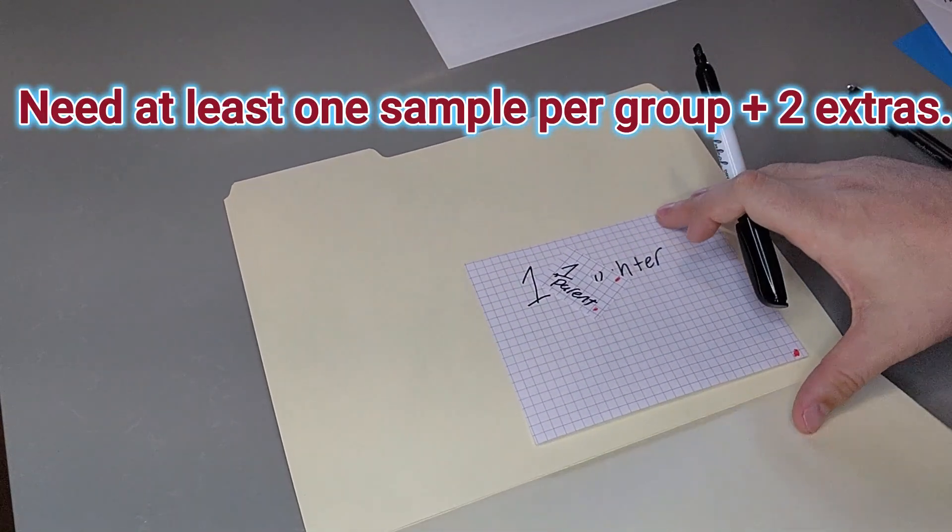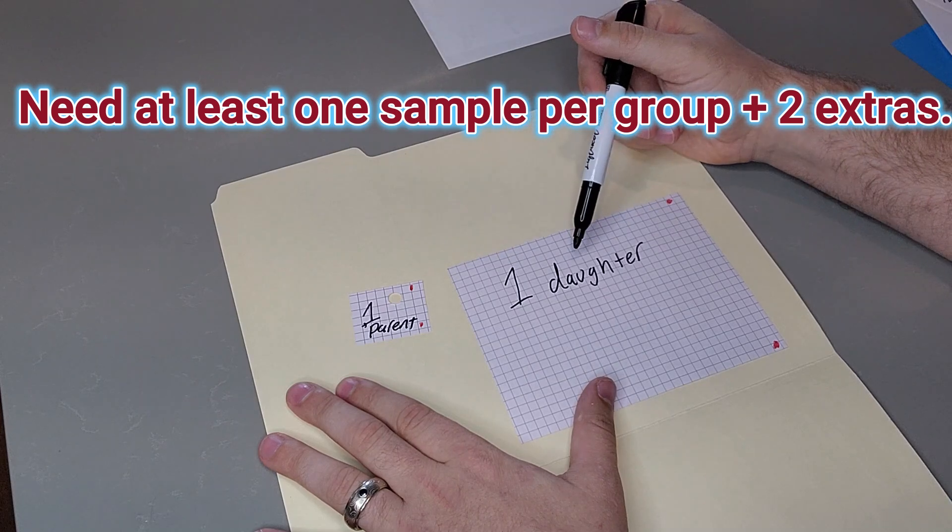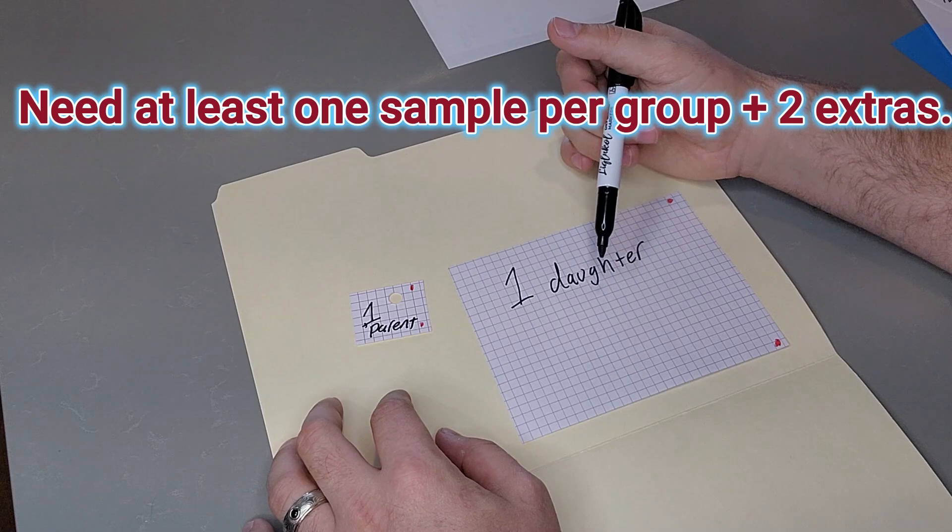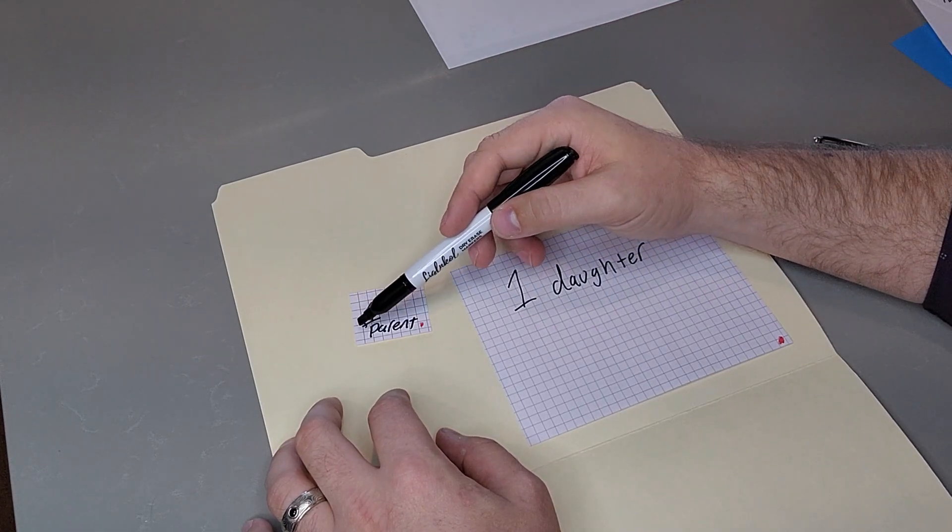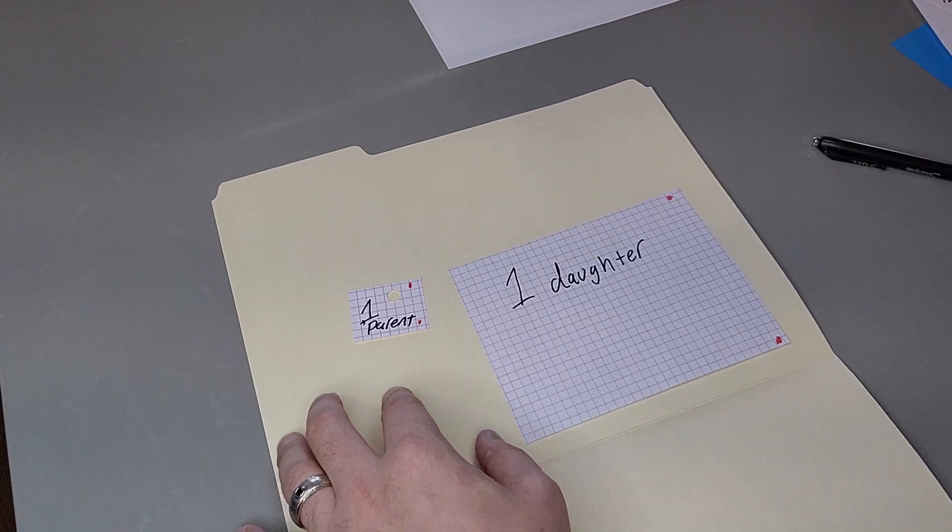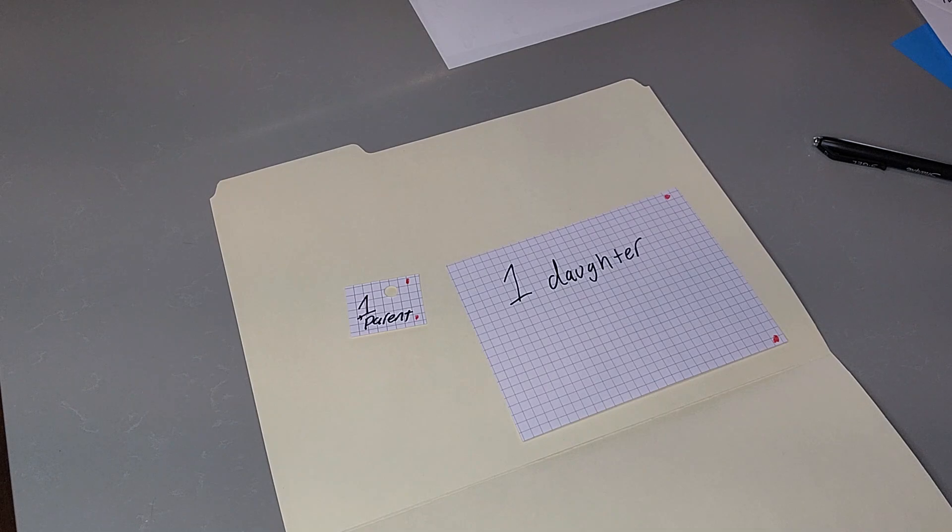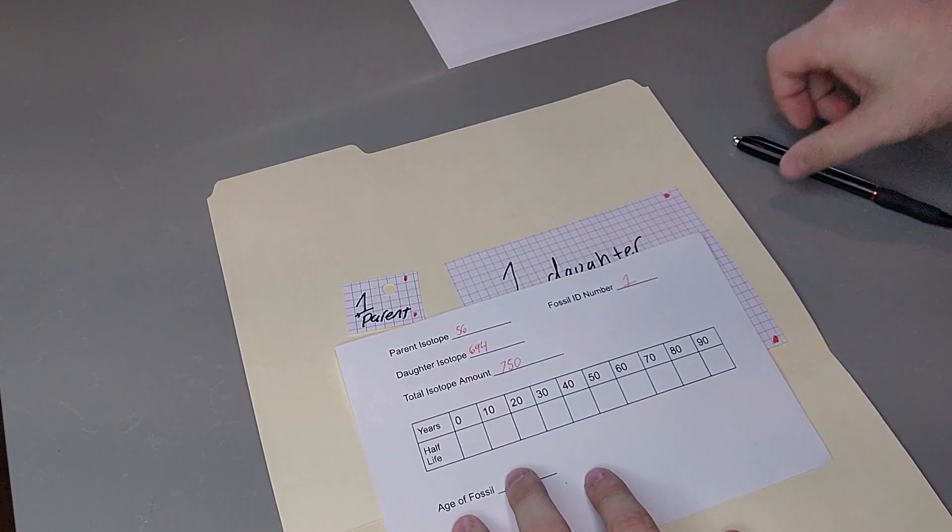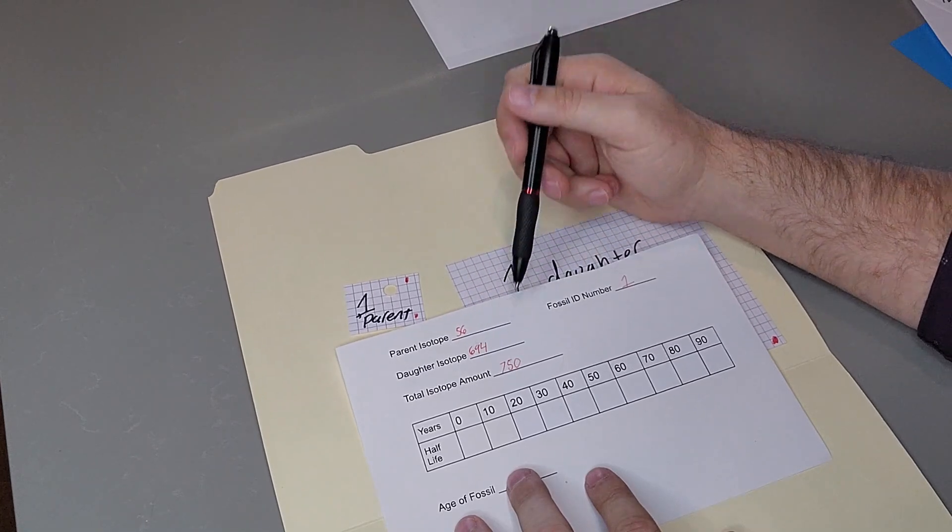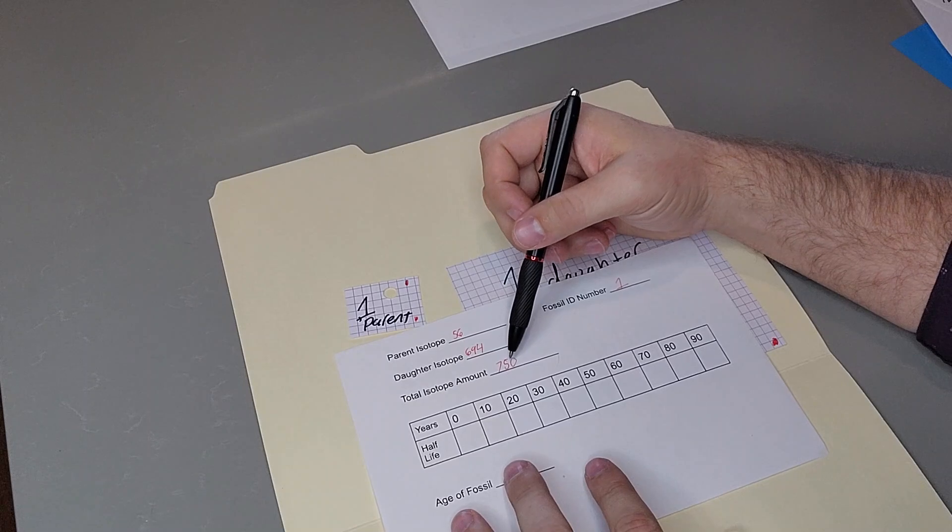So this is what sample one looks like. I give them a parent, and then I give them a daughter isotope. We're going to count the squares here and count the squares here. However many squares are here is what we're going to count for the parent, and then how many squares are here is how many we're going to count for the daughter. So if I count this ahead of time, there is about 56 squares here for the parent isotope, and about 694 here for the daughter isotope. That would mean a total of 750.